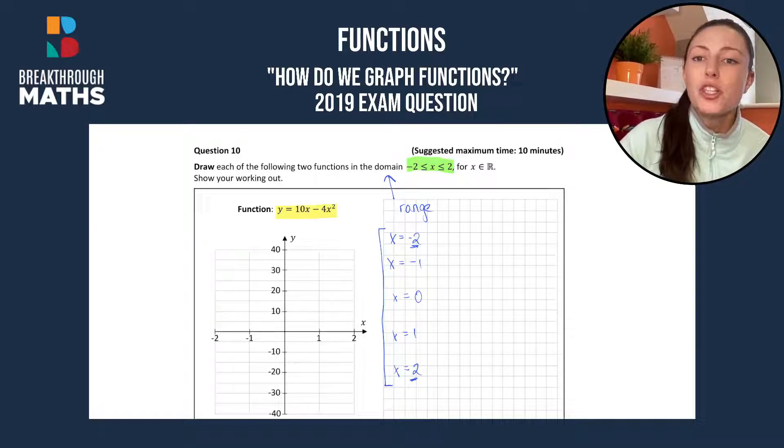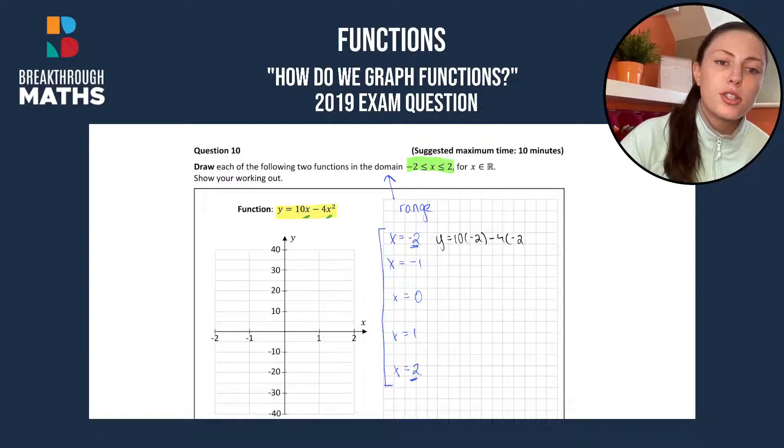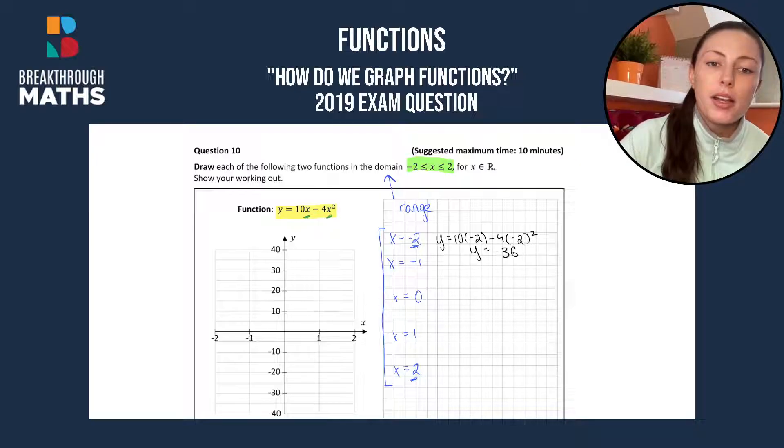Then we just use substitution. Anywhere we used to have an x we replace it with our number. So when x is minus 2, y is going to be equal to 10 times minus 2 minus 4 by minus 2 squared, and that will give us y equals minus 36. When x is minus 1, y is going to be equal to 10 by minus 1 minus 4 by minus 1 squared, and that gives us y is minus 14.